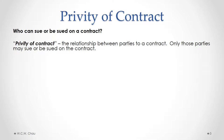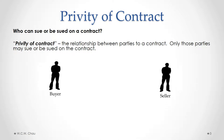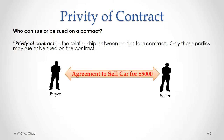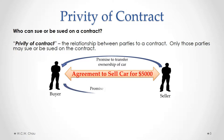If there is a third party that has some legal obligation or legal benefit arising from a contract, that third party cannot be sued or sue. For example, consider an agreement between a buyer and a seller to sell a car for $5,000. The consideration exchange is that the seller promises to transfer ownership of the car in exchange for a promise from the buyer to pay $5,000 to the seller's sister.